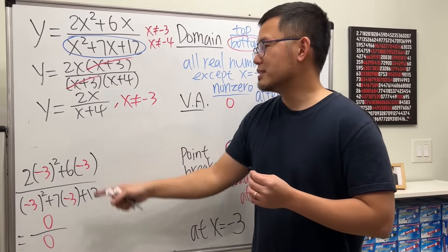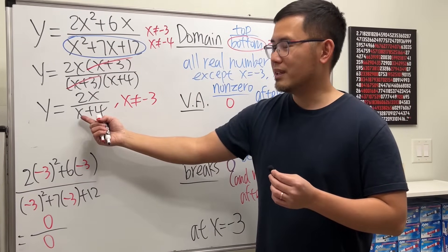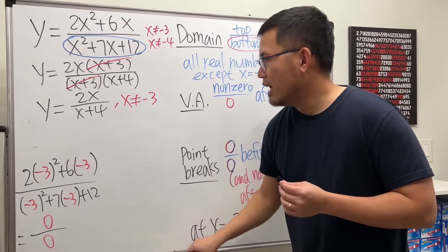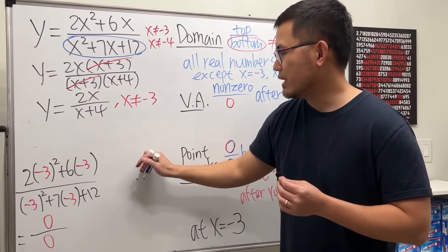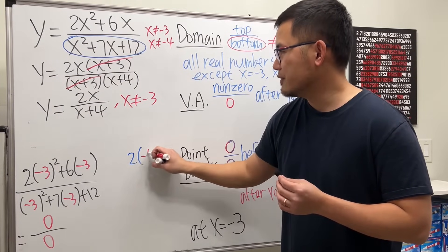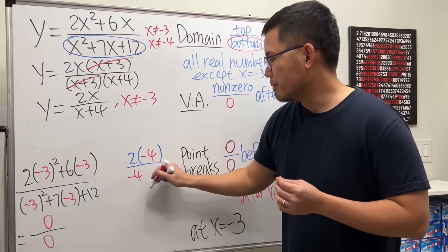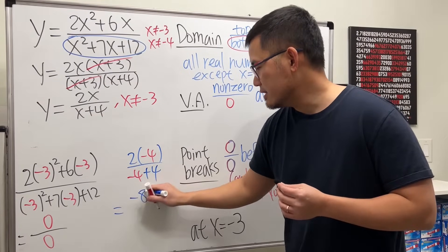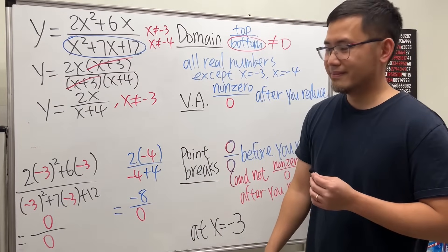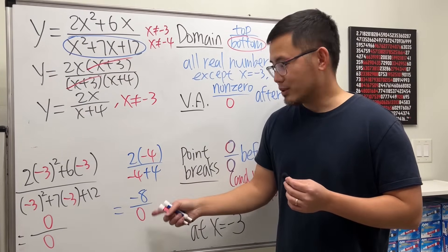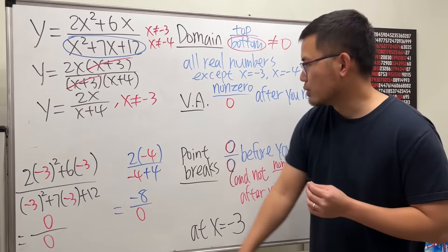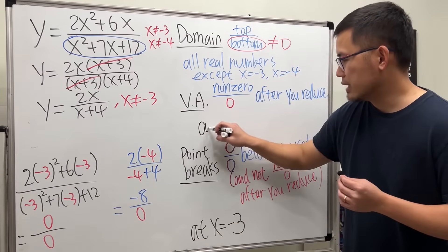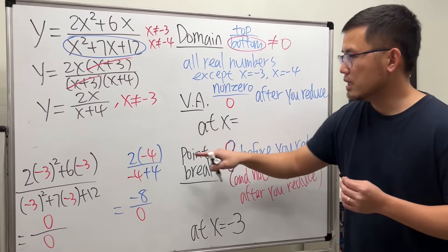Now, if you look at this, you can see that when x is negative 4, you make the 0 on the bottom. And check this out. I'm going to put negative 4 in here. We will get 2 times negative 4 over negative 4 plus 4. And on the top, we get negative 8. On the bottom, we get 0. This is a non-zero case over zero. That is a vertical asymptote case. So at x equals negative 4.